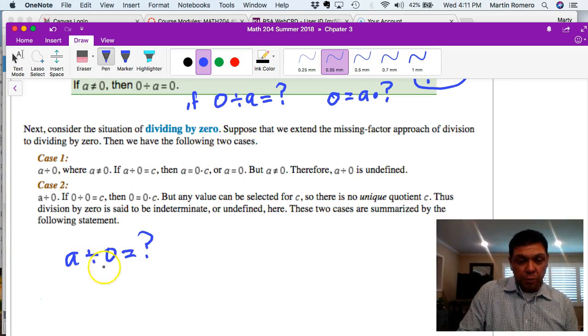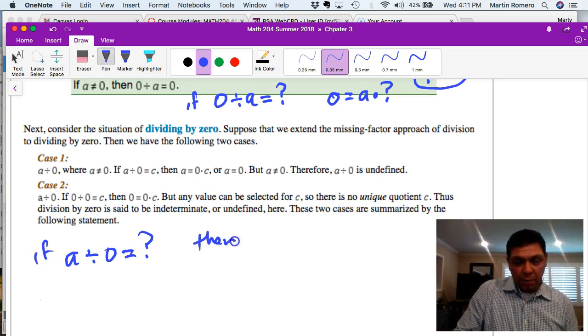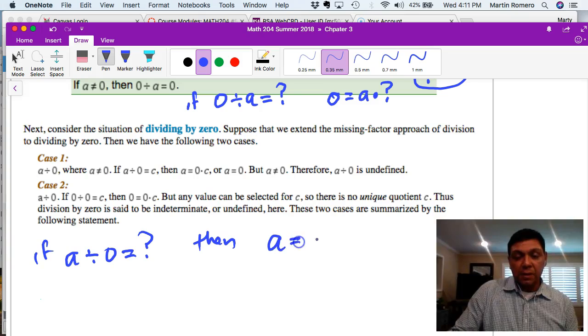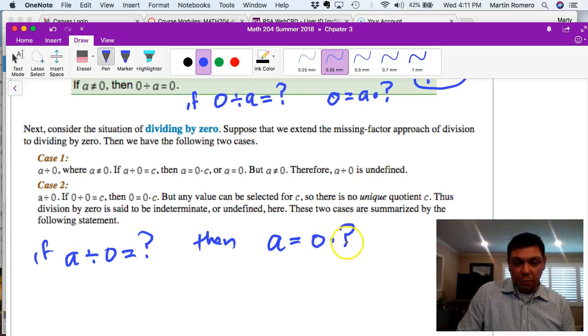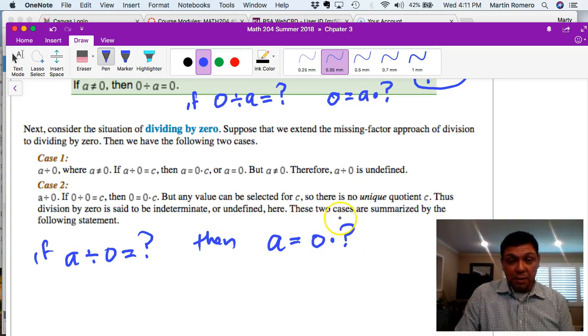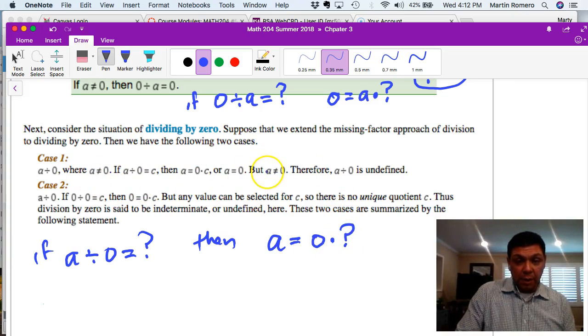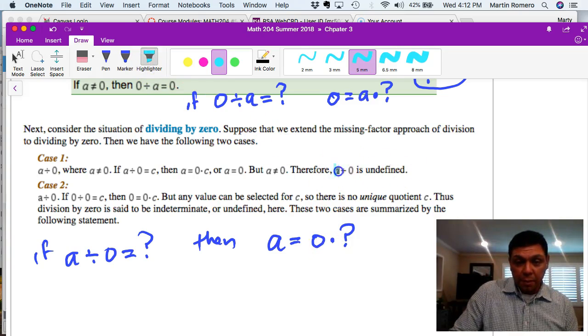So if this is true then what we have is a is equal to zero times some number. And so in that case what can that number be? Zero times what number something equals a. And in this case, in case number one, this question mark put a number in there - one, two, three - zero times one would have to be anything here would have to be zero.